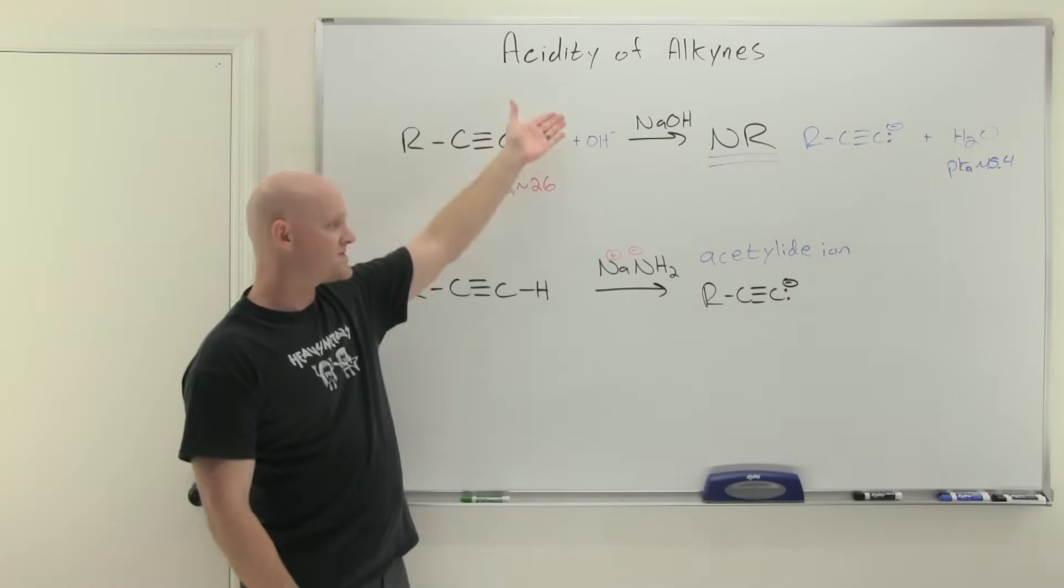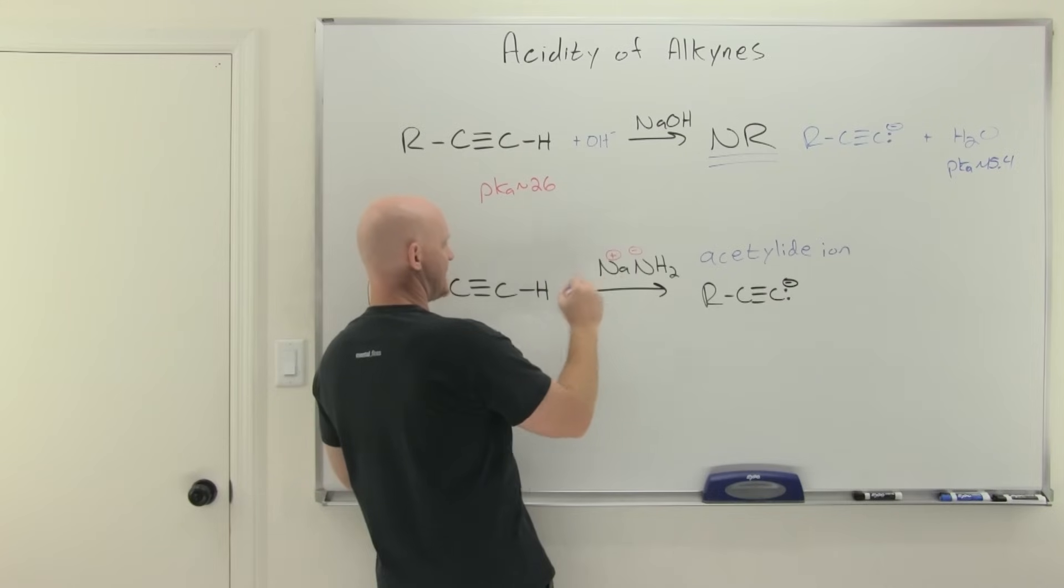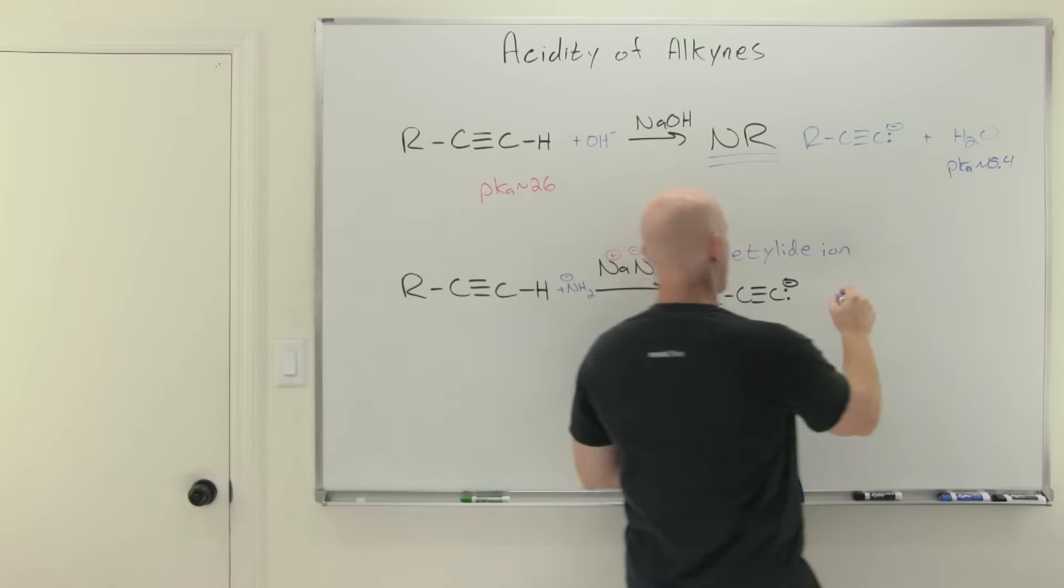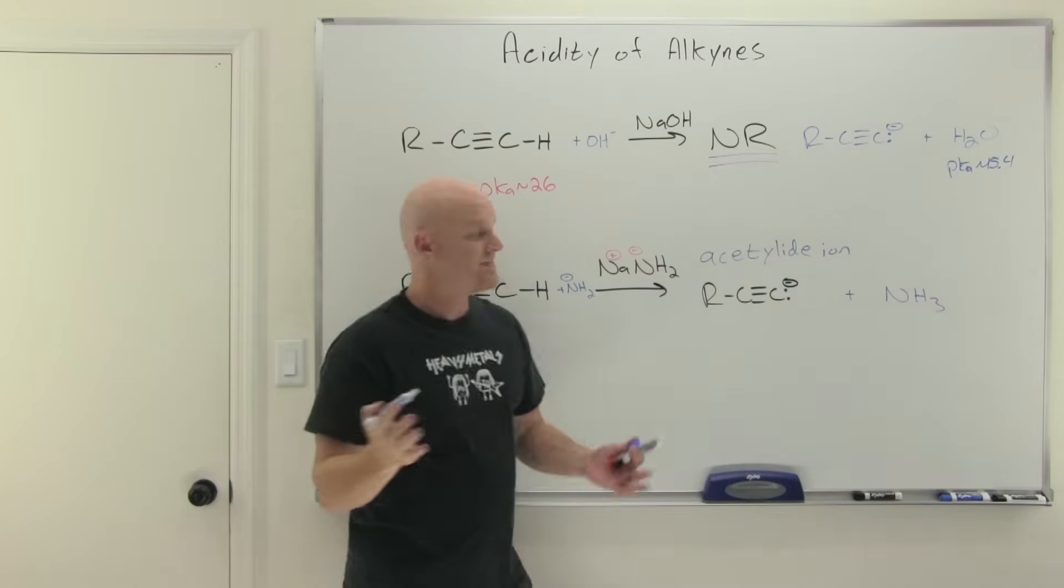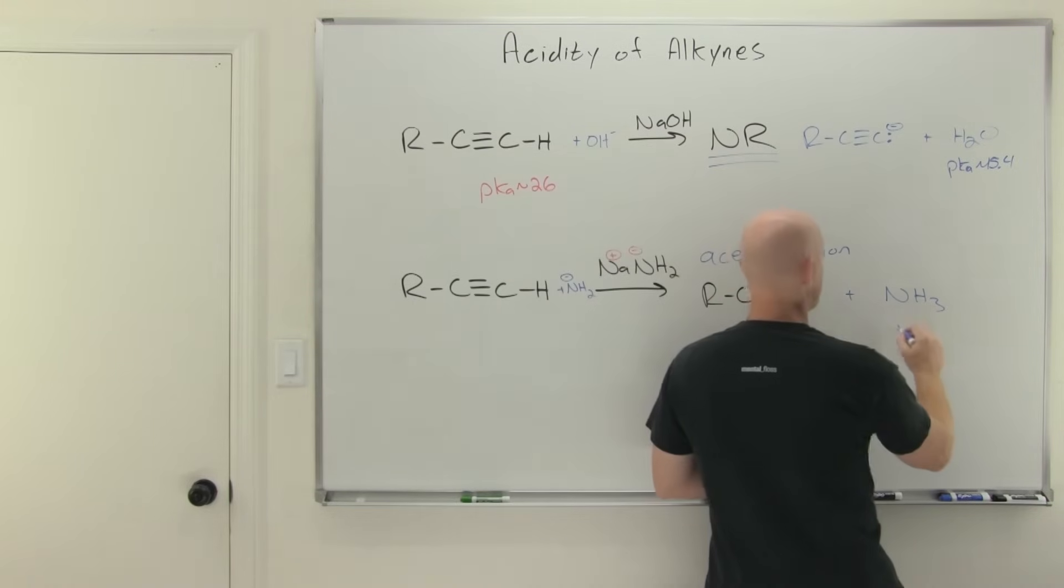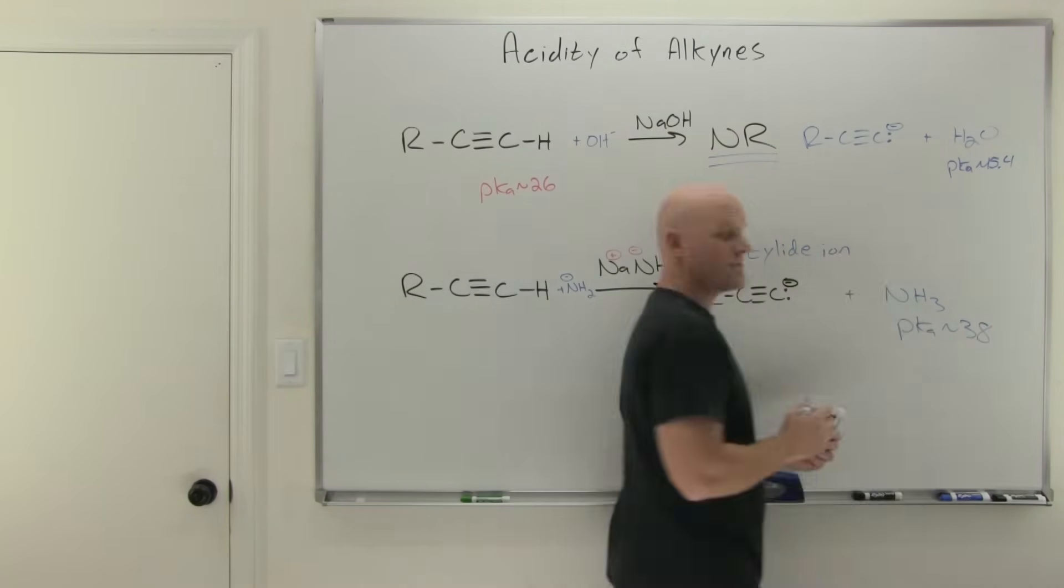So why does this reaction work whereas the top one did not? Well again if we kind of write in our other reactant here it's really the amide ion. So we got that amide ion and then your product over here would therefore be ammonia. So the key difference here is that ammonia has got a pKa not of 15.4 but somewhere in the ballpark of like 37, 38.